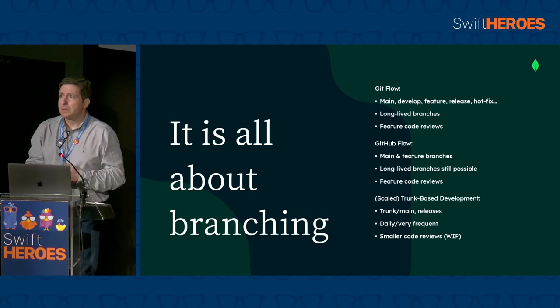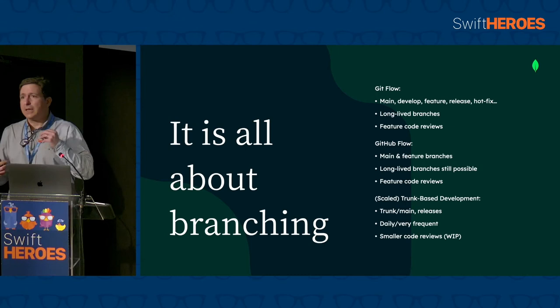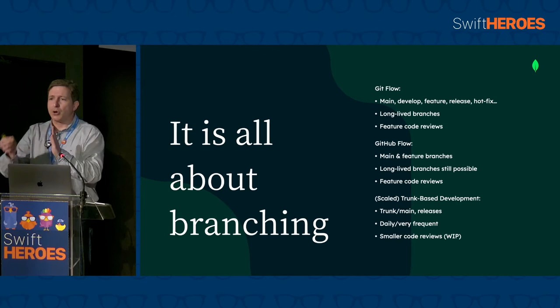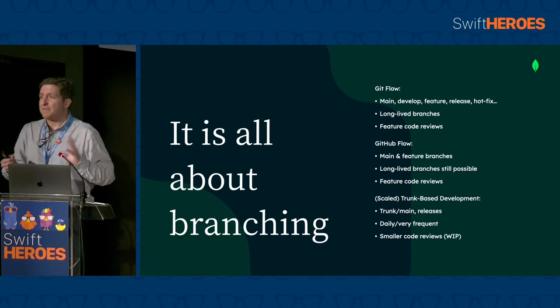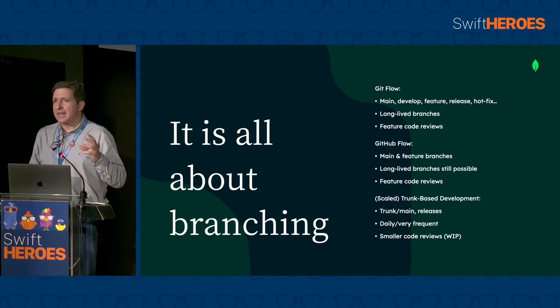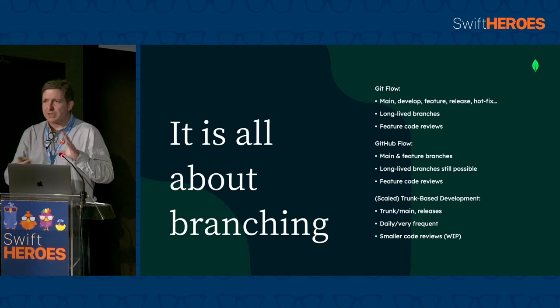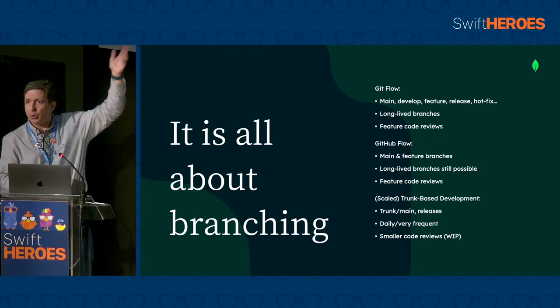There's another alternative: trunk-based development. It's probably the trendiest approach, using a single main branch where you are constantly merging code. The first time you hear about that you start thinking these people are crazy, because merging back unfinished code is harmful. The idea is that you obviously need tests if you want to use this branching model — everything is tested and enabled or disabled based on the build you are running. This is when feature flags made a lot of sense.